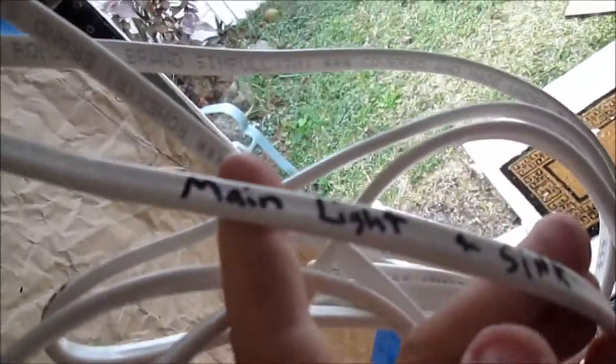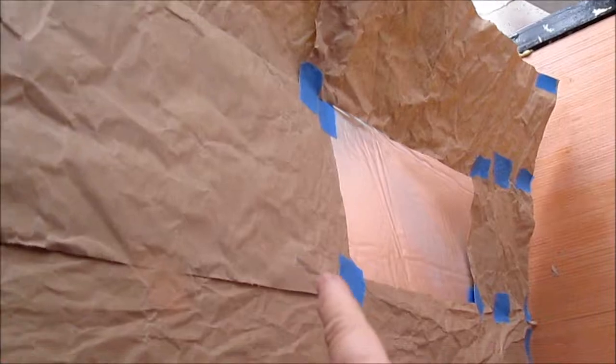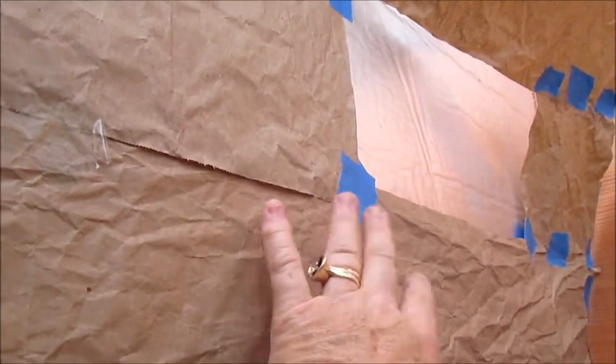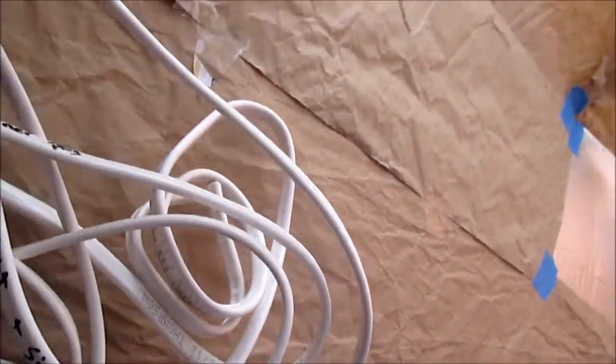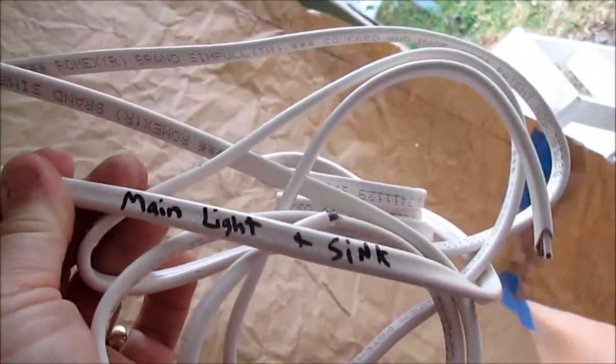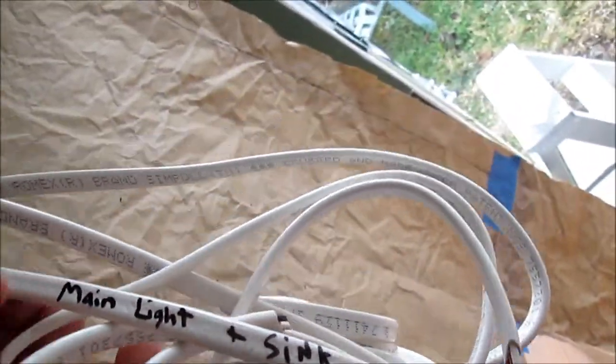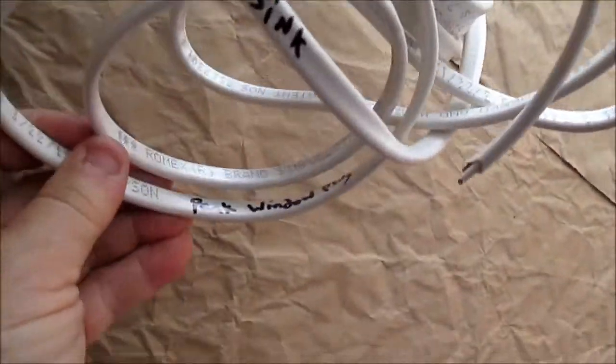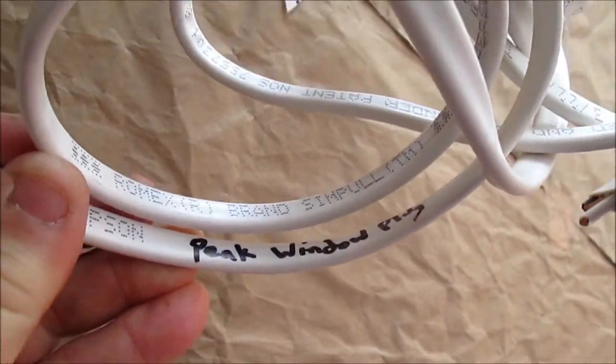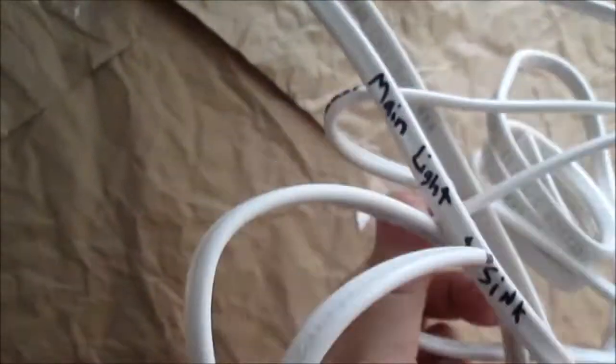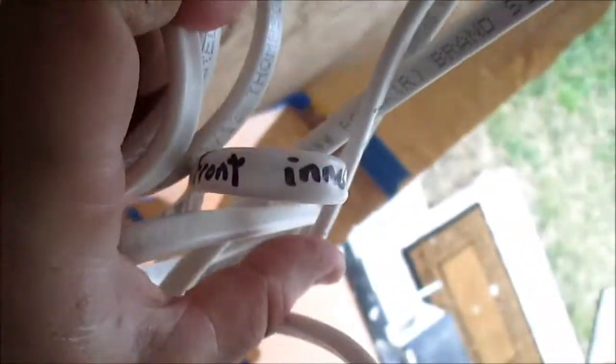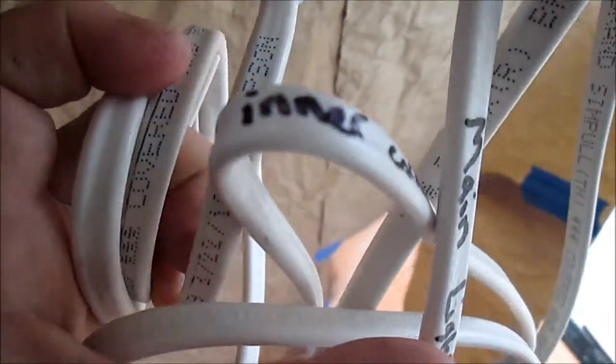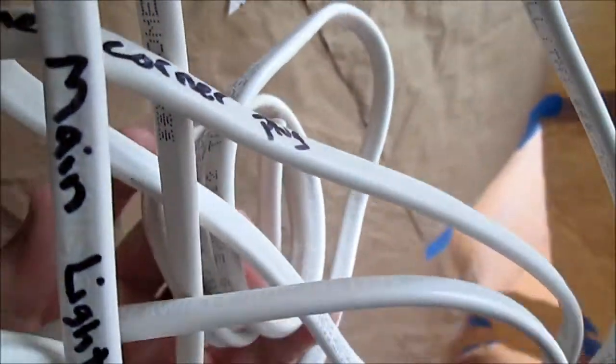This is also something I recommend. I have them marked so that when they come down and go into the battery box and the fuse box and stuff, I will have everything marked. This says main light and sink. Then I have one that says peak window plug, and then the other one is the front inner light and plug.